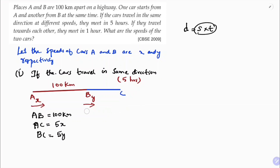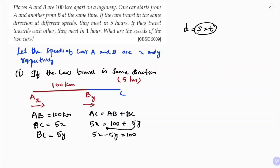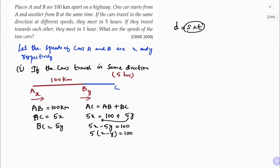From the diagram, AC equals AB plus BC, so 5x = 100 + 5y. Transposing 5y to the other side gives 5x − 5y = 100. Taking 5 as common: x − y = 100 divided by 5, so x − y = 20. This is equation 1.